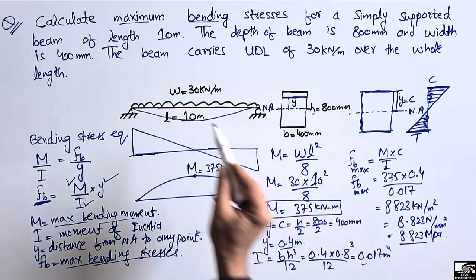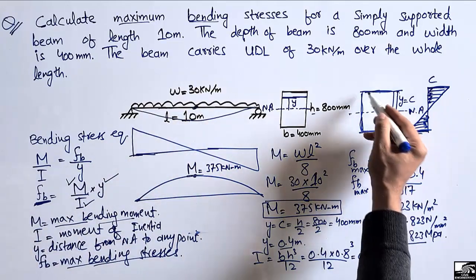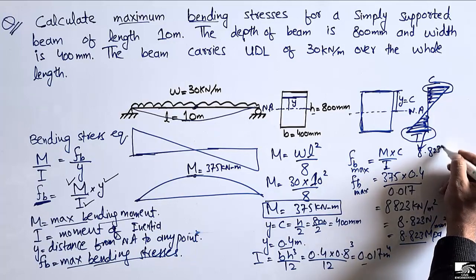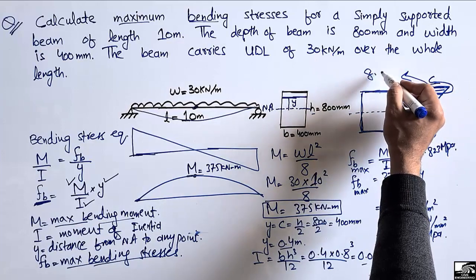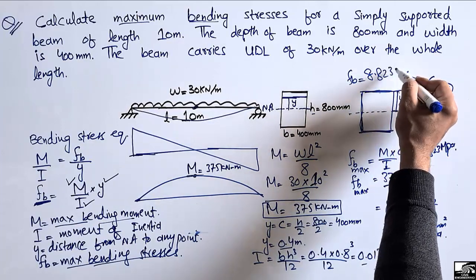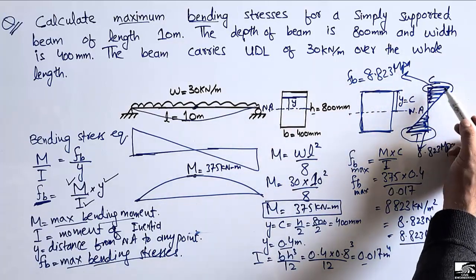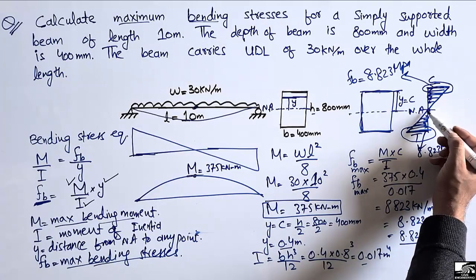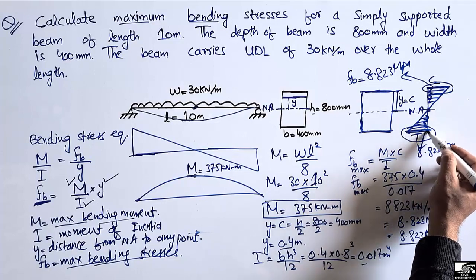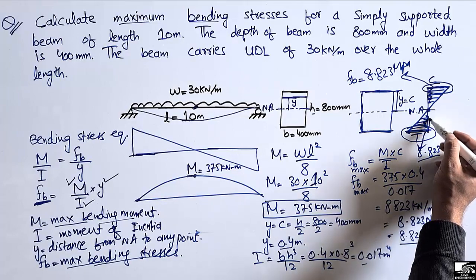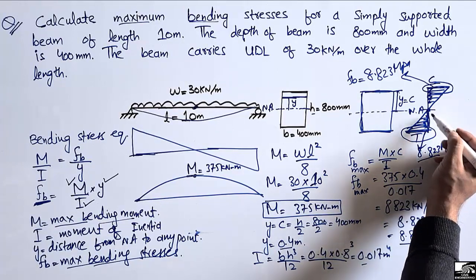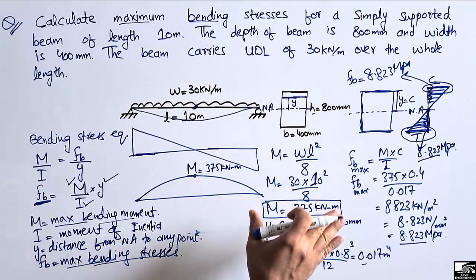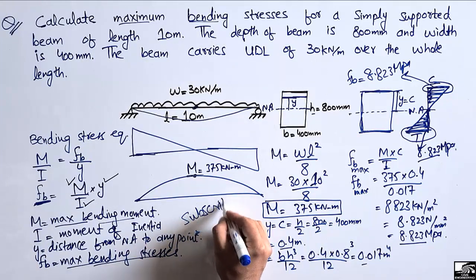The maximum stress of 8.823 MPa occurs at the extreme top and bottom portions at the mid-span of the beam. As we move toward the neutral axis, the bending stress decreases and becomes zero at the neutral axis. Hope you understand how to find the maximum bending stresses for a beam. Don't forget to subscribe to our channel. Thank you for watching.